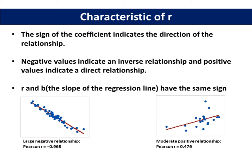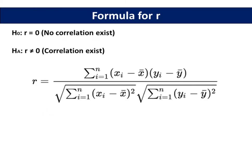The sign of the coefficient indicates the direction of the relationship. Negative values indicate an inverse relationship and positive values indicate a direct relationship. R and the slope of the regression line have the same sign. The null hypothesis is R equals 0, which means no correlation exists. On the other hand, the alternate hypothesis is R does not equal 0, which means correlation exists.